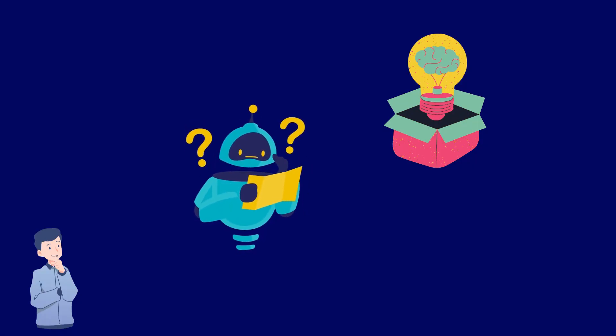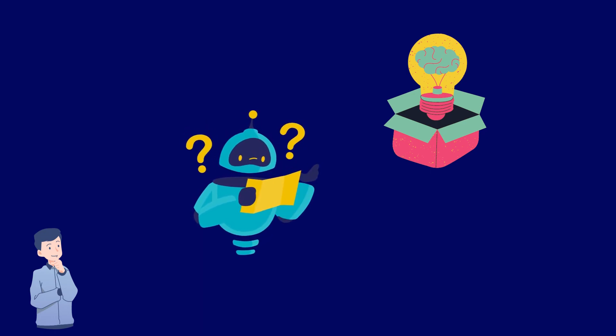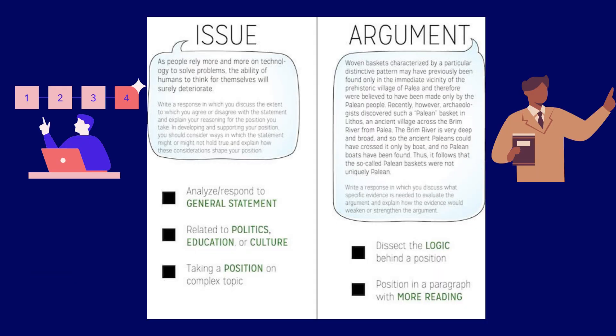What is the Analytical Writing Section of the GRE? The Analytical Writing Section of the GRE measures your ability to articulate complex ideas and support your arguments effectively. It consists of two essays: the issue task, where you present and support your perspective on a given issue, and the argument task, where you analyze and critique an argument.